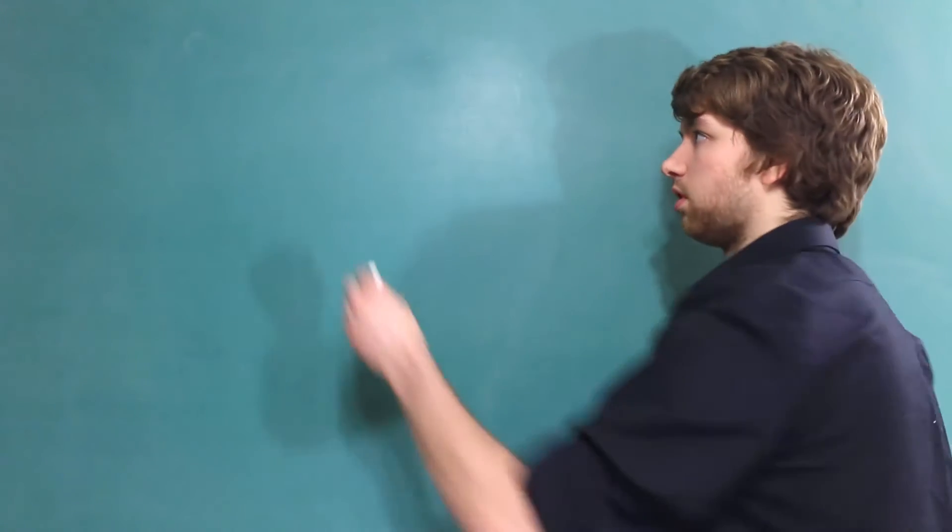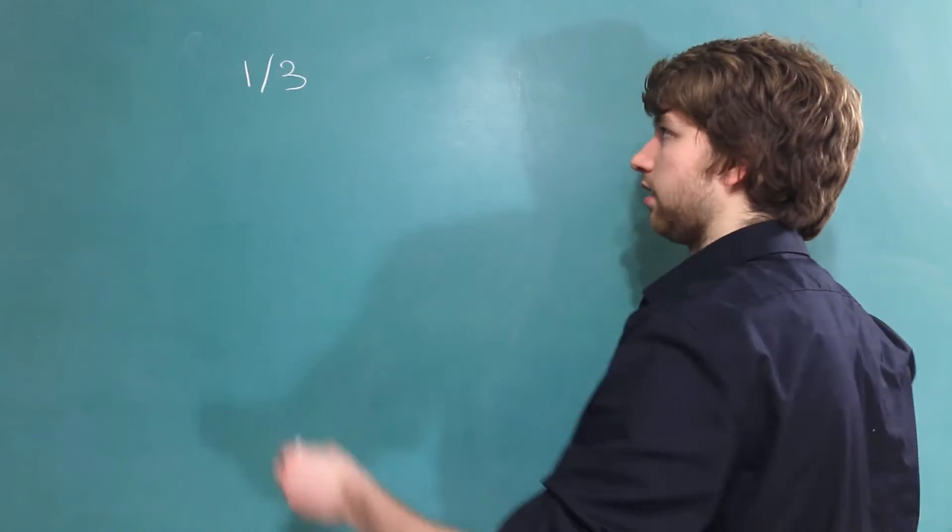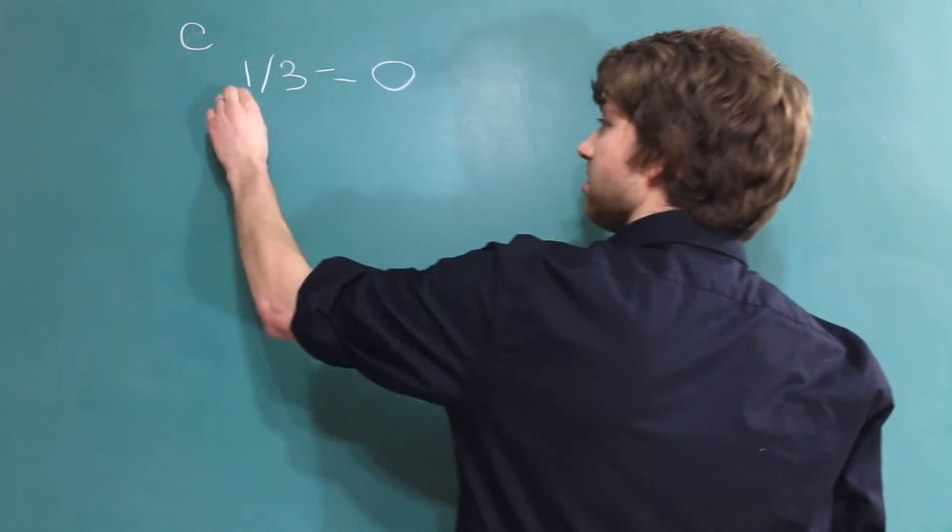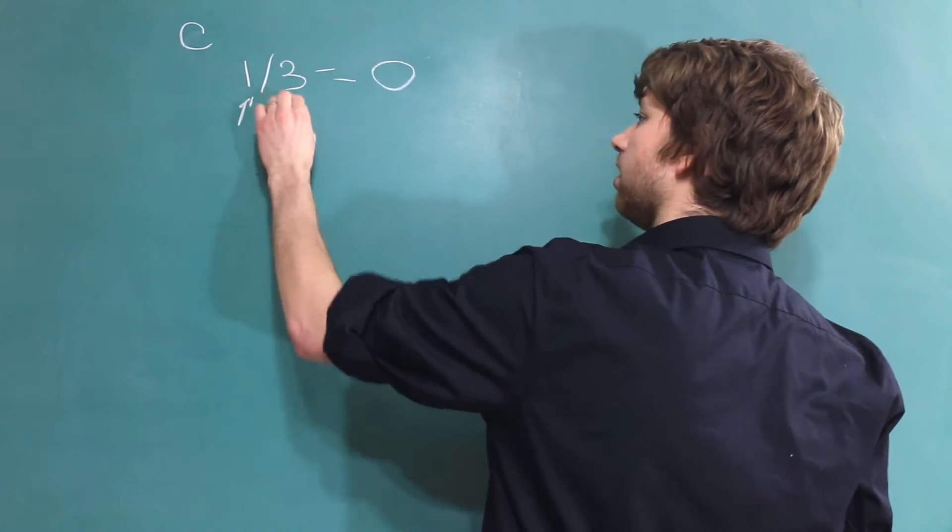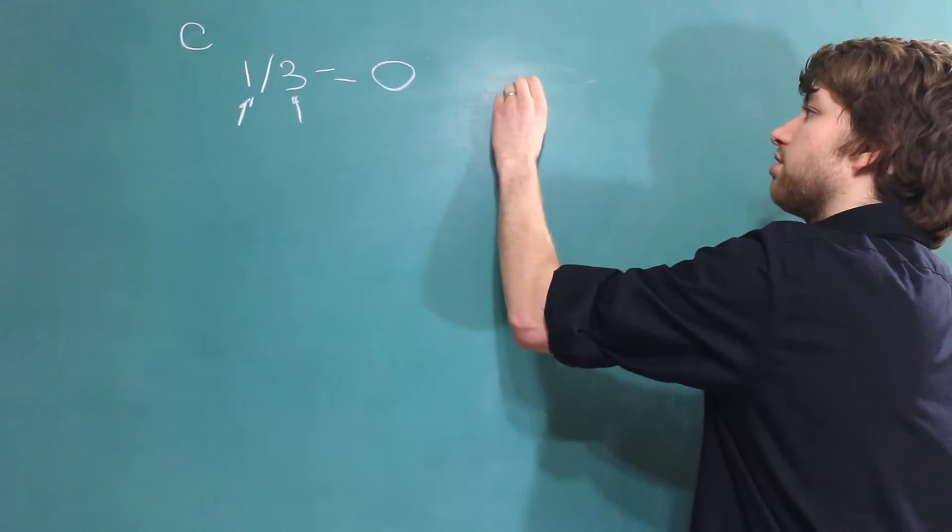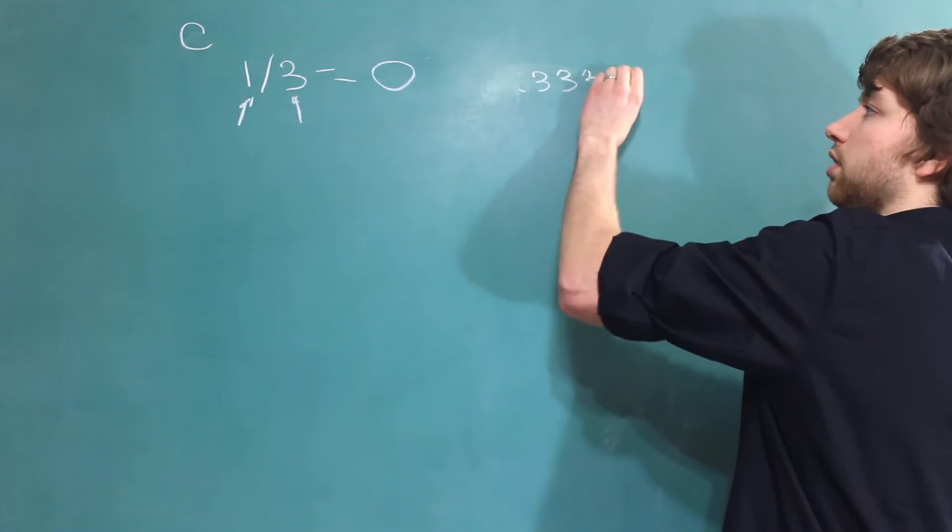So to illustrate the difference between a strongly typed language and a loosely typed language let's consider an example. One divided by three. In C this is going to equal zero. That's because these are both integers. In a loosely typed language that's probably not going to happen. The result will probably be .333 and so forth.